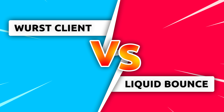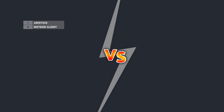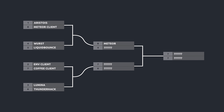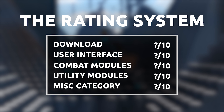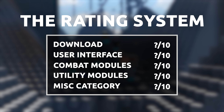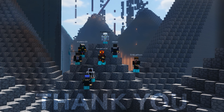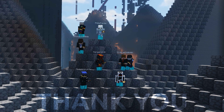Hey guys, what's going on? I hope you're all doing well. Welcome back to the second mini episode of CCO, where we are comparing popular free clients against each other to determine which free client is the best. As a quick recap, in the first episode we had Meteor vs. Aristos, with Meteor coming out as the clear winner. And the winner of today's video will move on to face off against Meteor.